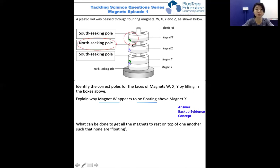So if we look at the diagram, we notice that the like poles of magnet W and X are facing one another. Both are north-seeking poles.